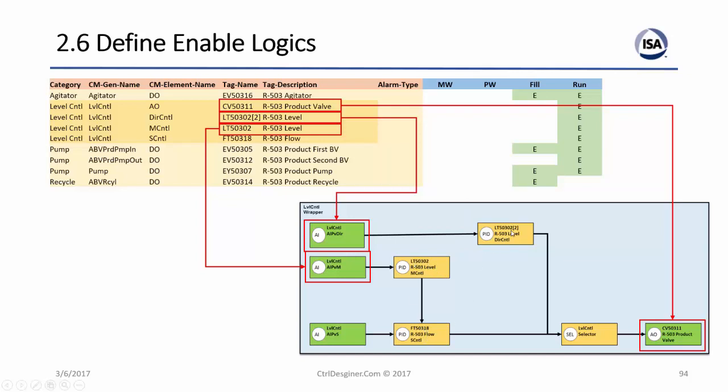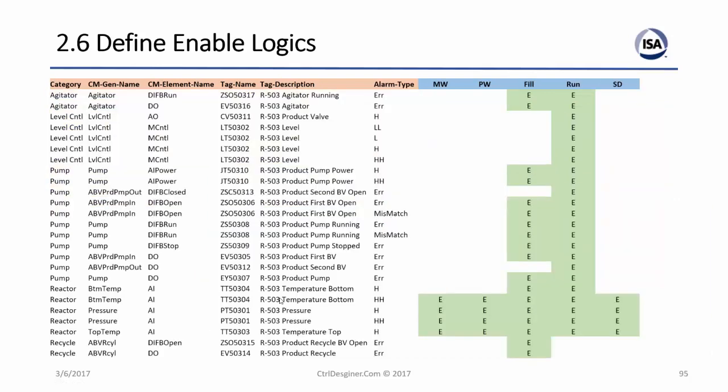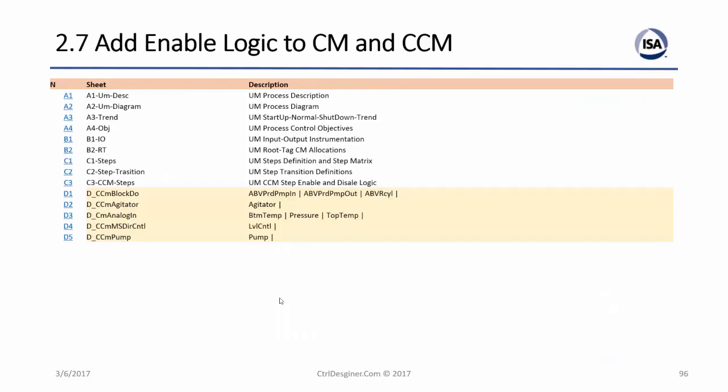Looking at the alarms, the same matrix approach applies. You go into this matrix and specify whether each alarm is enabled or disabled for each step — no need for complex shelving or alarm reduction sophistication. The instrument names are allocated in the matrix accordingly.